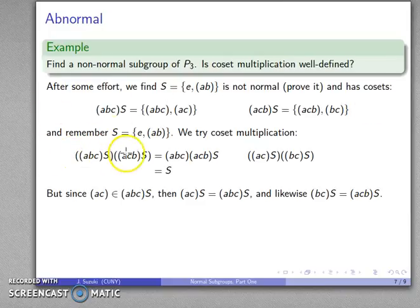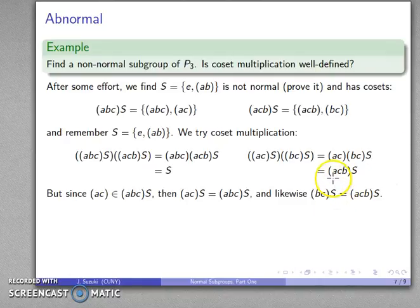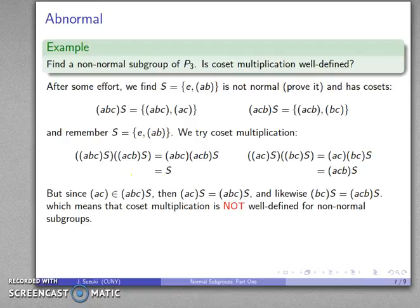So this product and this product - these are the same cosets, but when I do the product I get (ac) times (bc)S, and that's going to give me (acb)S, and these are different. That says that my coset multiplication is not well-defined if my subgroup is not normal.